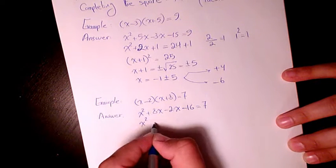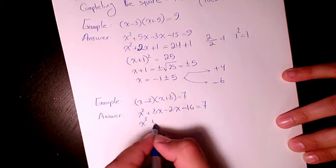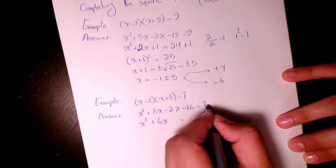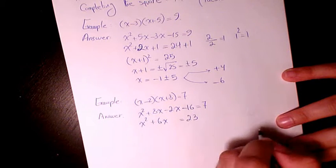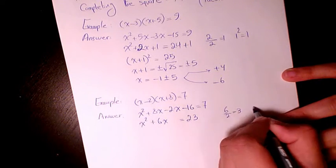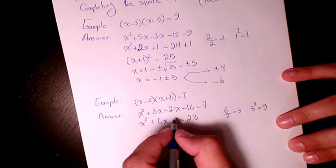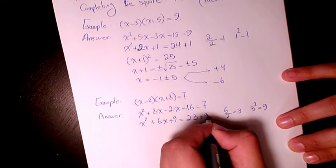So we have x squared. 8x minus 2x is 6x. 7 plus 16 is 23. Then 6 divided by 2 is 3. 3 squared is going to be 9. So plus 9, plus 9.